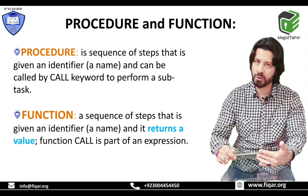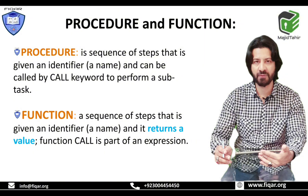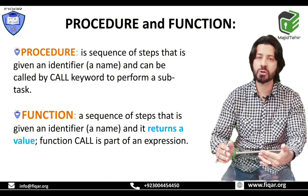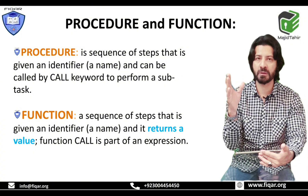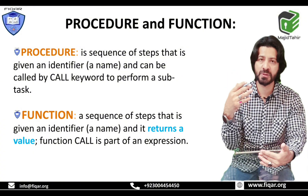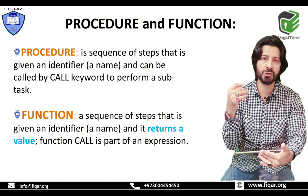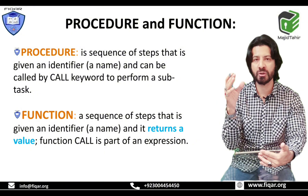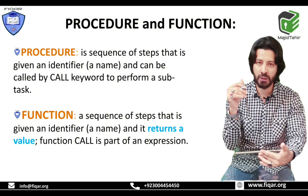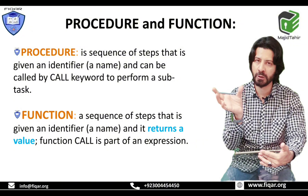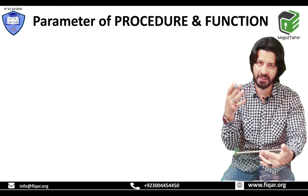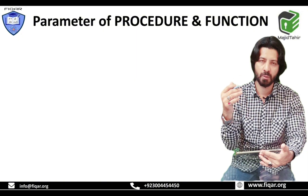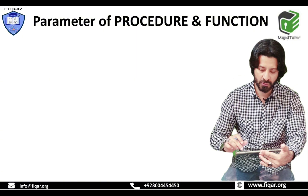A function is also a sequence of steps that is given a name — an identifier — and it will also do some specific steps when it is called. The difference between a procedure and a function is that a function always returns a value. A function has a value that it returns to the program, and we will see how the function returns the value when we look at the code in the following slides.